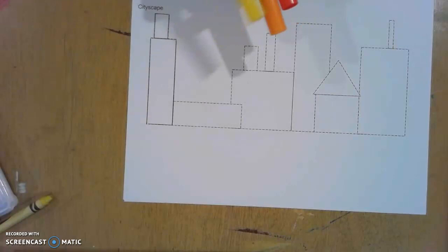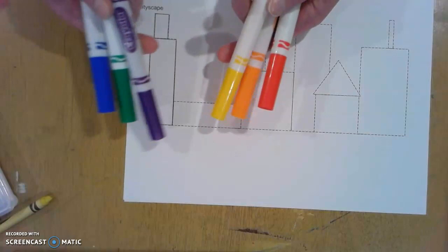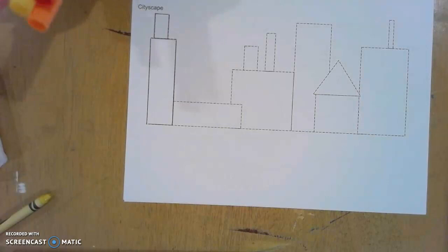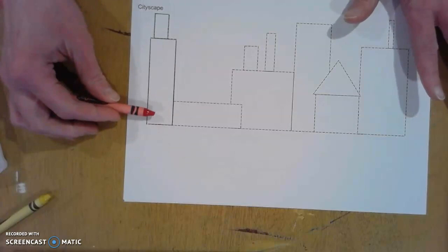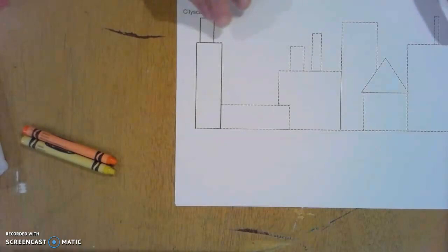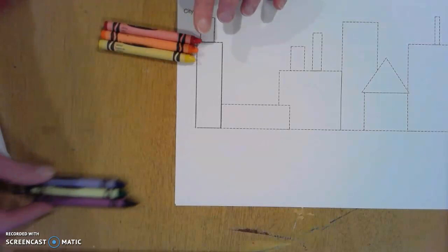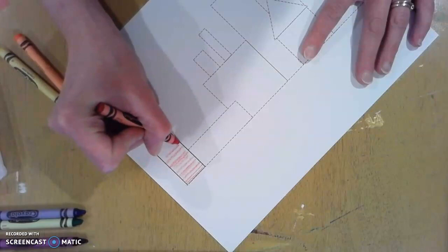Now it's important to use materials that are motivating for our students. If your child's really a marker person, awesome. My daughter is more of a paints person, so whatever you can use to keep this motivating would be great. But crayons always work well. Basically, we're going to take our crayons in the warm colors or cool colors. If you remember from last week, warm is red, orange, and yellow. Cool is blue, green, and purple.